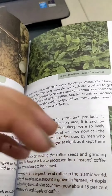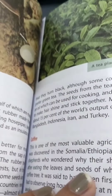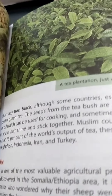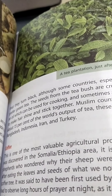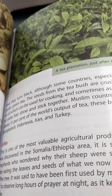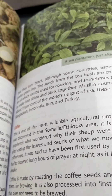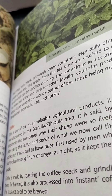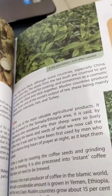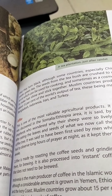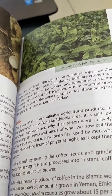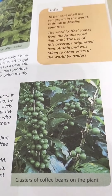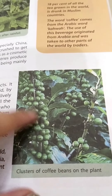Muslim countries are producing about 50% of the world's output of tea, which accounts for 15% of the whole world's tea production. The Muslim countries producing tea include Bangladesh, Indonesia, Iran, and Turkey.